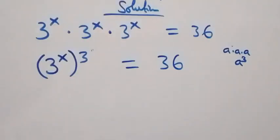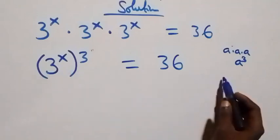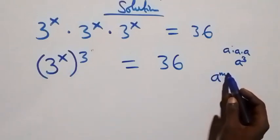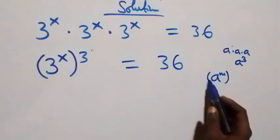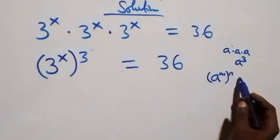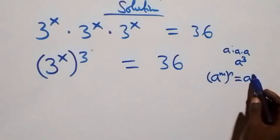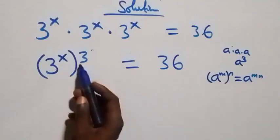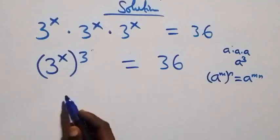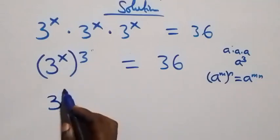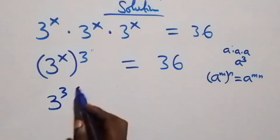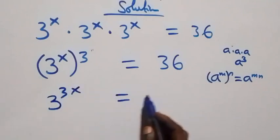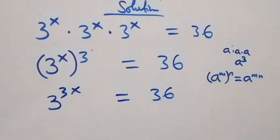This follows from the law of indices, where a raised to power m, raised to power n, is the same as a raised to power mn — that is, the powers multiply. So we have 3 raised to power 3x equals 36.